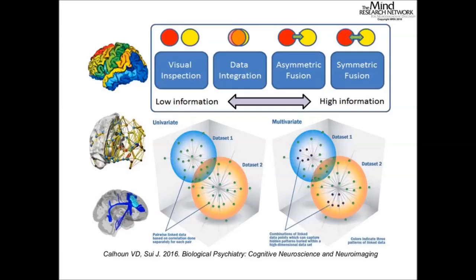The third approach is the asymmetric field, where you use one imaging modality to constrain another — for example, EEG or fMRI. However, this can impose unrealistic assumptions that don't exist in practice. The fourth method, which we discuss mainly today, is the symmetric field, where we treat each modality equally and take maximum advantage of the joint information among modalities.